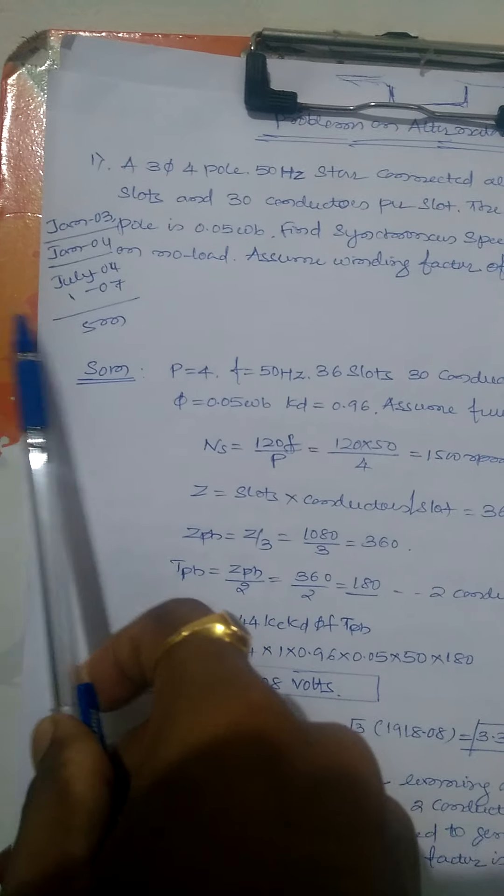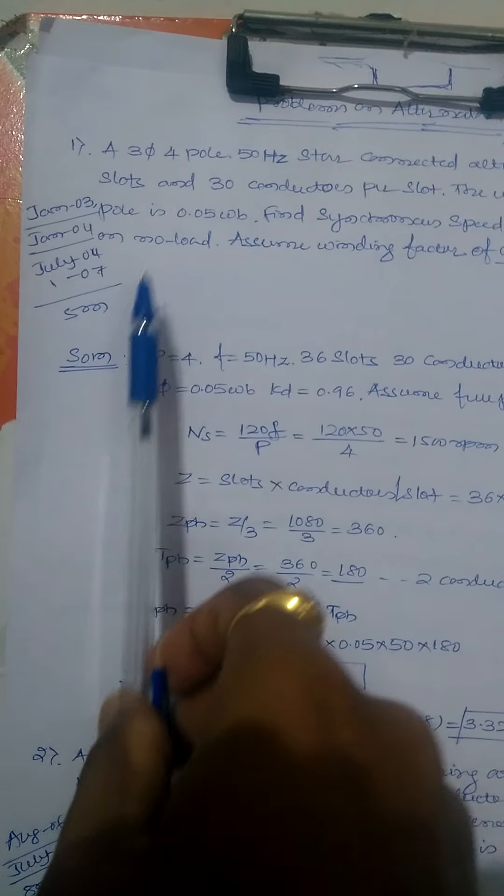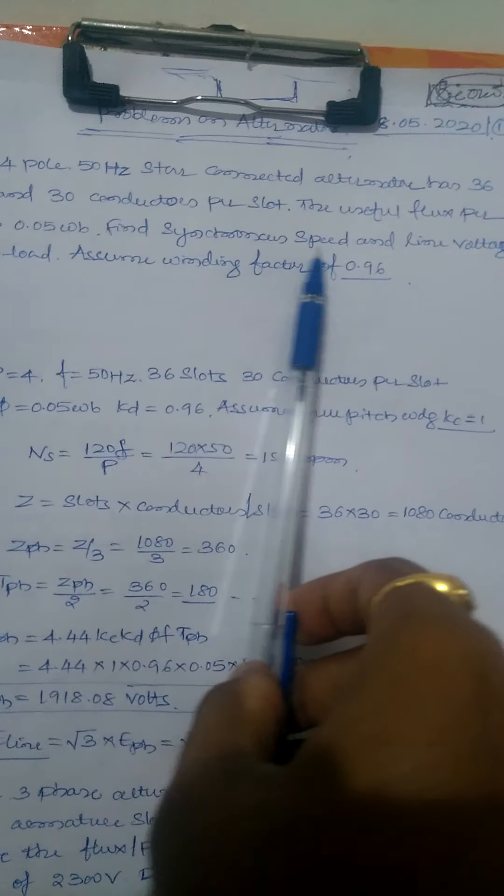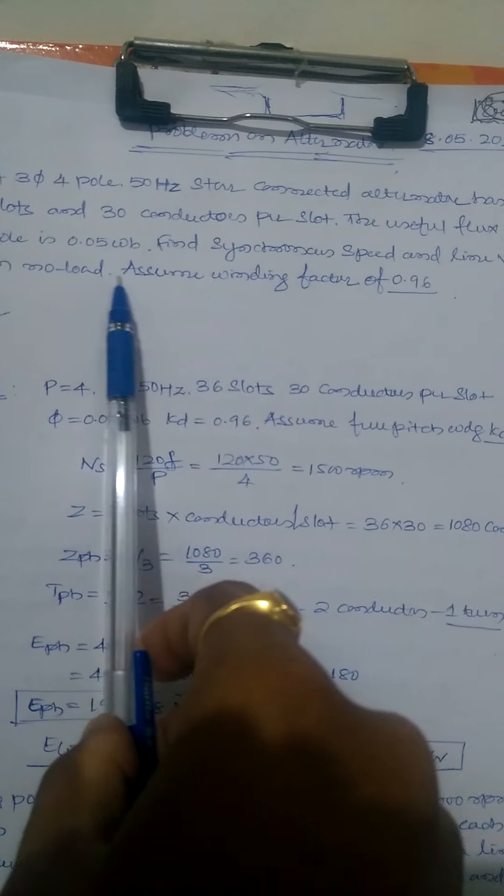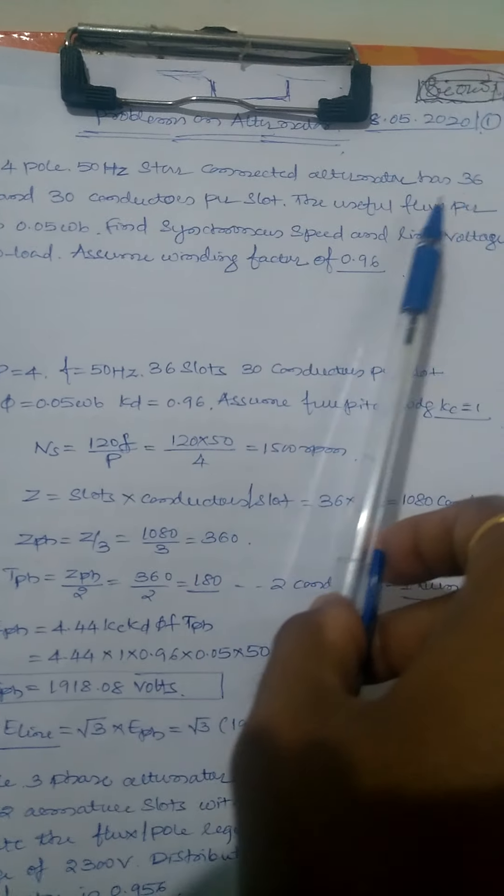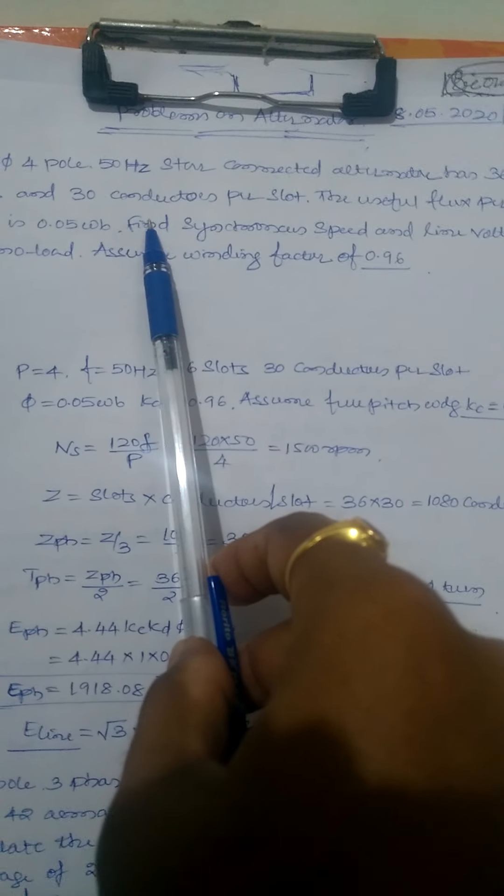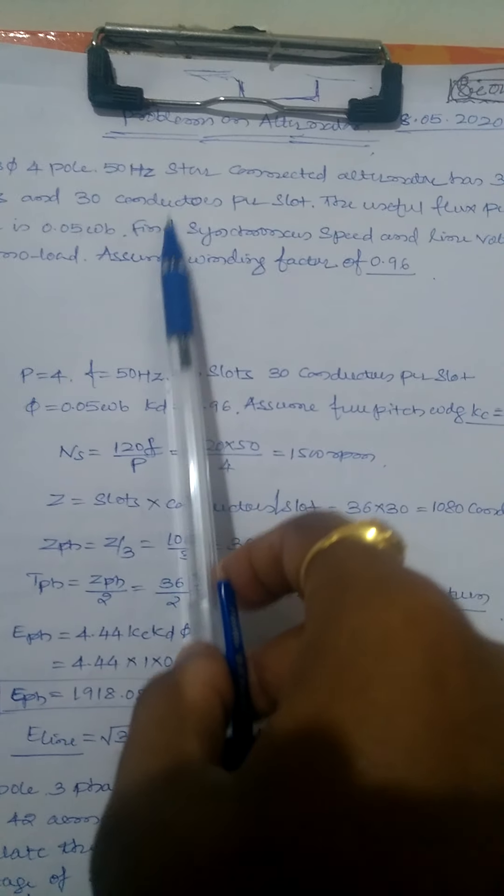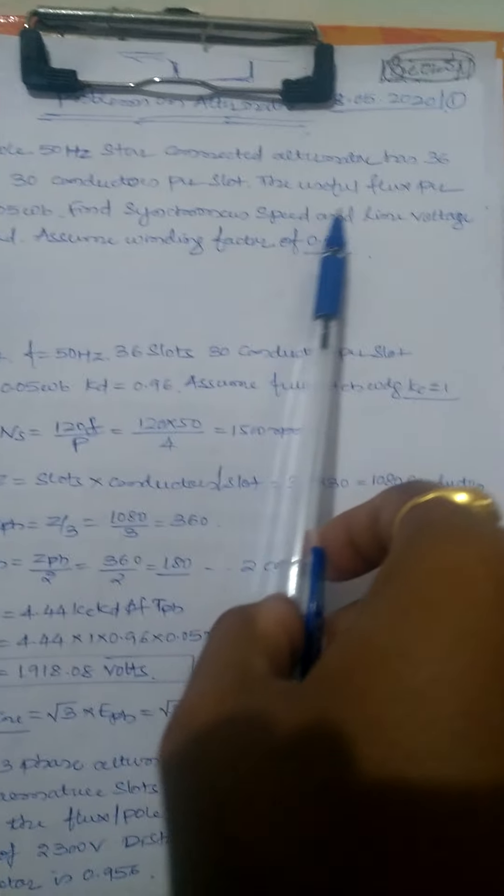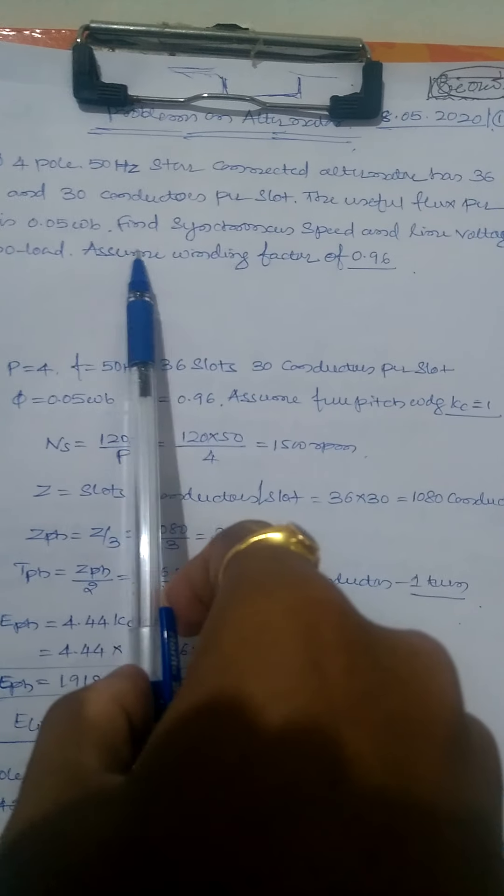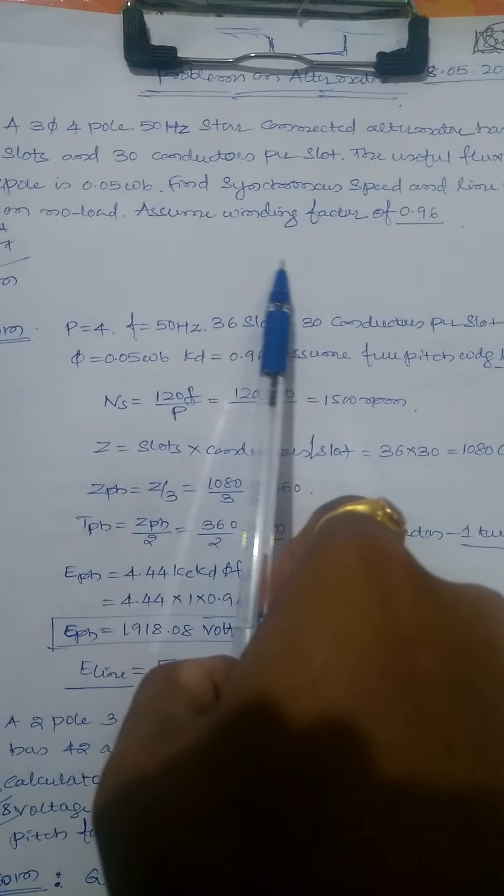The first problem is from exam papers January 2003, 2004, and July 2004. It's worth seven marks. A three-phase four-pole 50 hertz star-connected alternator has 36 slots with 30 conductors per slot, meaning 36 into 30, so Z equals 1080 conductors total. The useful flux per pole is 0.05.